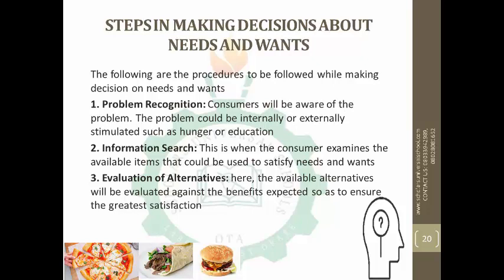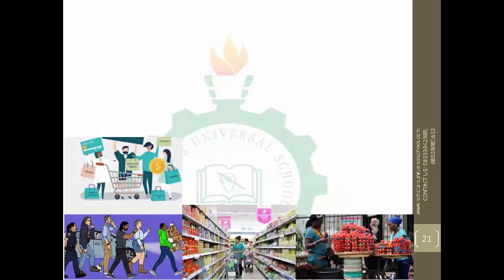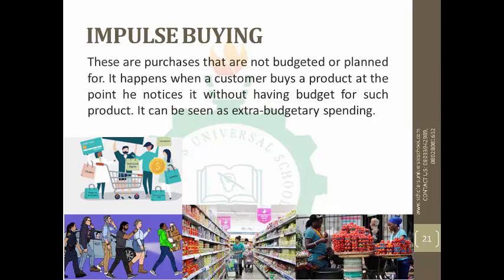You evaluate your alternatives: should I buy this or should I buy biscuits? The four steps are: number one, problem recognition; number two, information search; number three, evaluation of alternatives; and number four, purchase decision. After considering your alternatives, you make a decision. This is where the consumer commits his resources on the selected product or service. For example: 'I think if I buy this I'll be okay because it is plenty — they will sell enough beans for me.' So there are four steps: problem recognition, information search, evaluation of alternatives, and purchase decision.